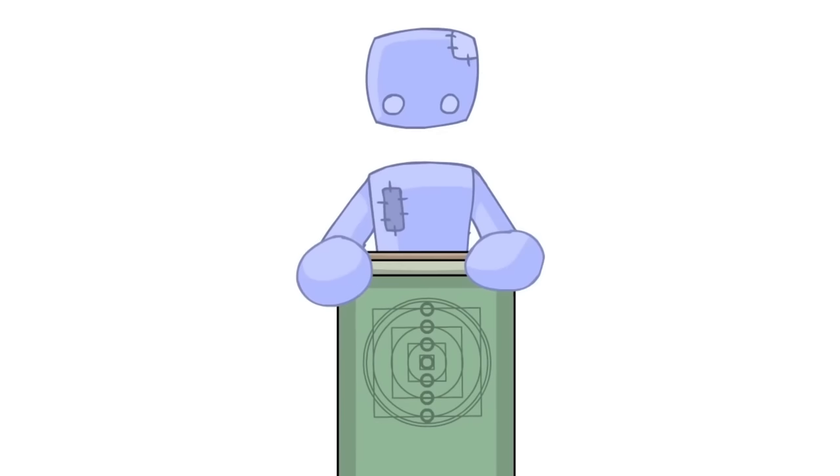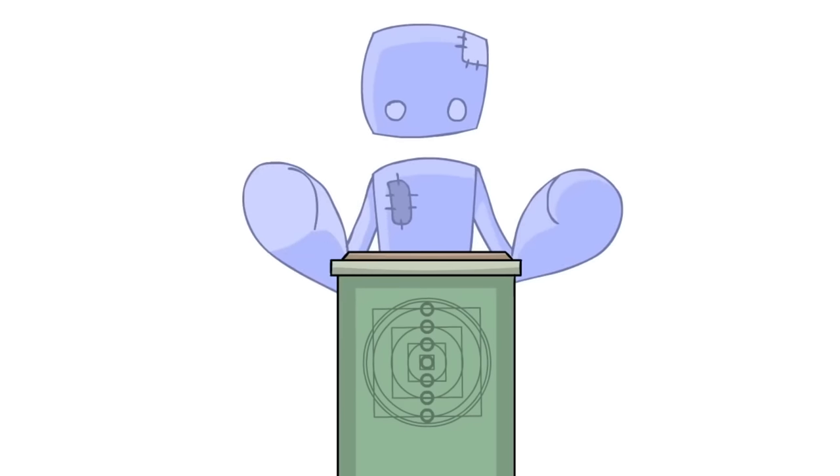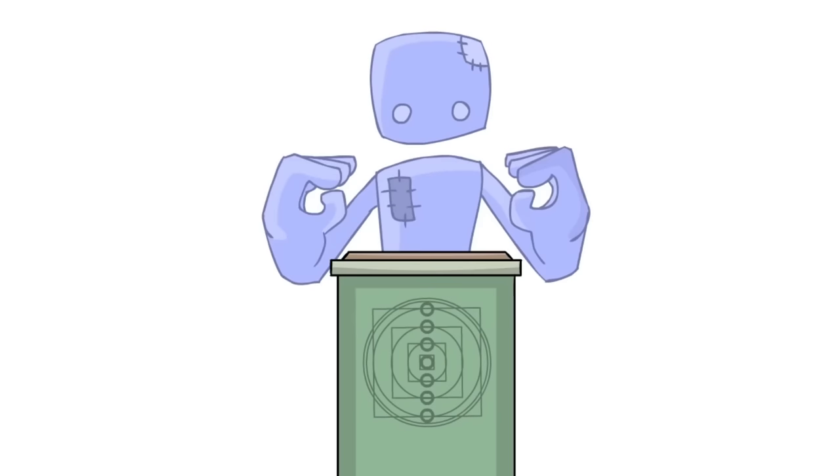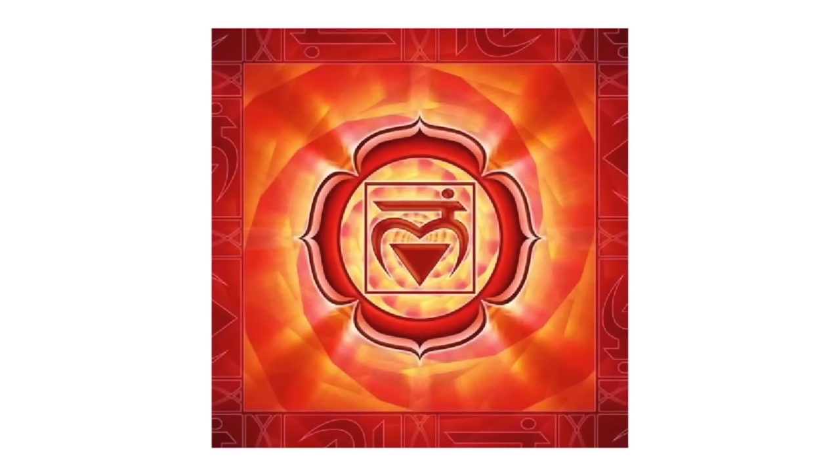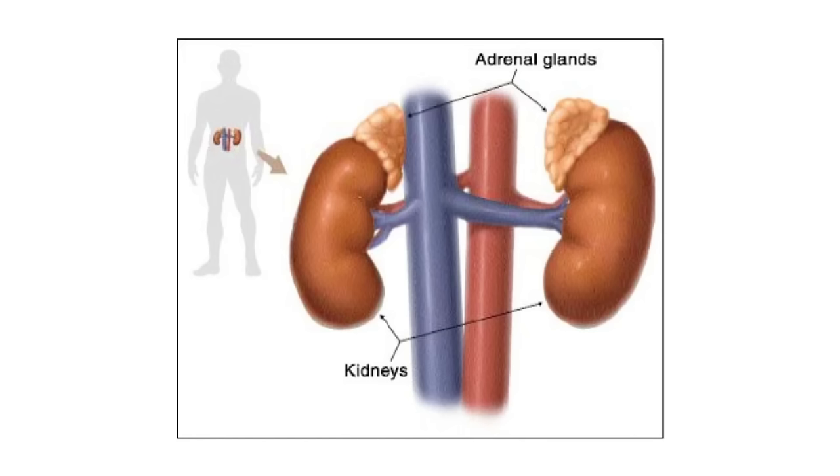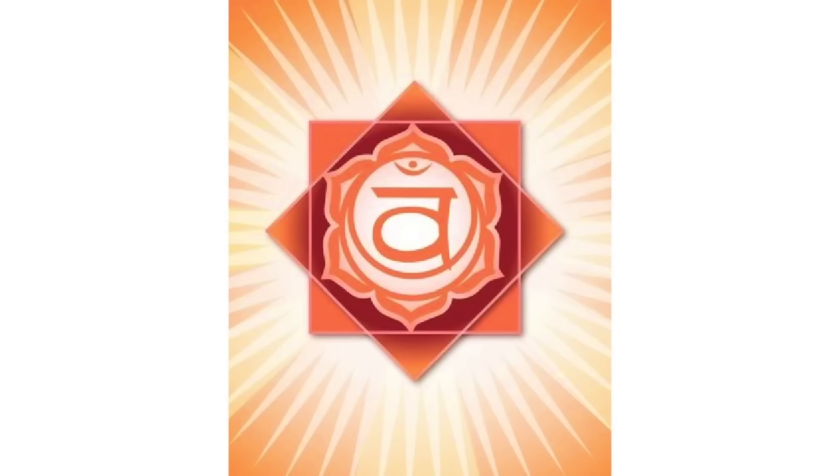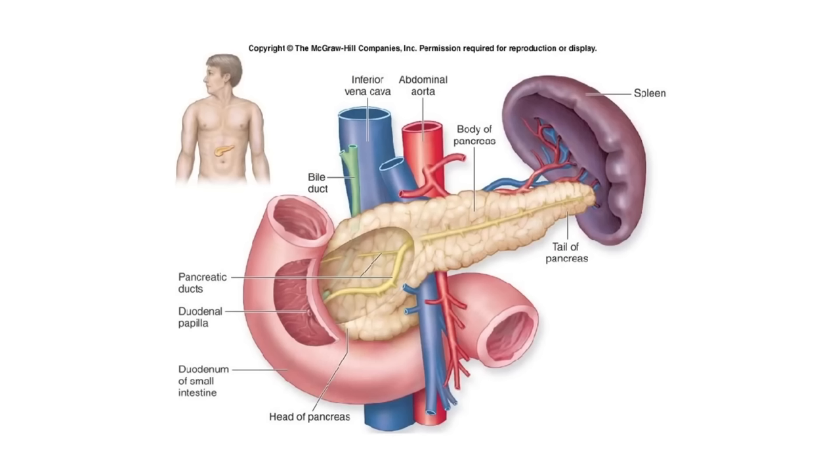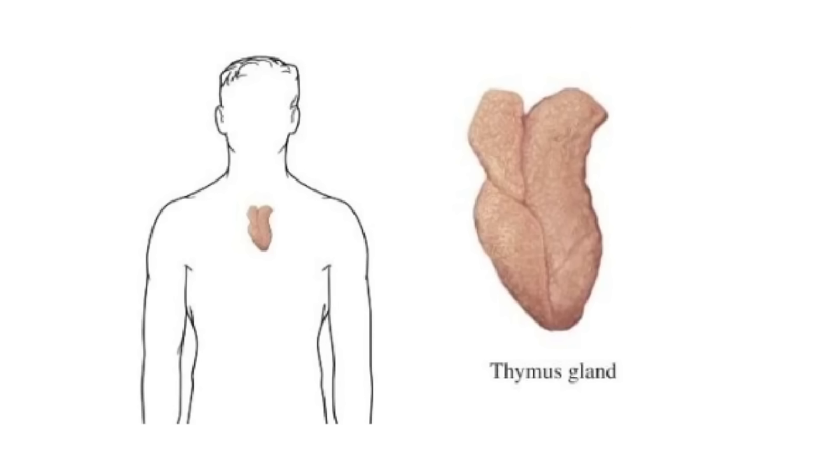Now, not only does each chakra connect to an organ or gland, but each chakra also has a very specific trait. The first chakra is survival, and is connected to the adrenal gland. The next one is sex, or interaction, which is connected to the gonad. The third is power, or ego, and is connected to the pancreas. The fourth is love, and connects to the thymus.